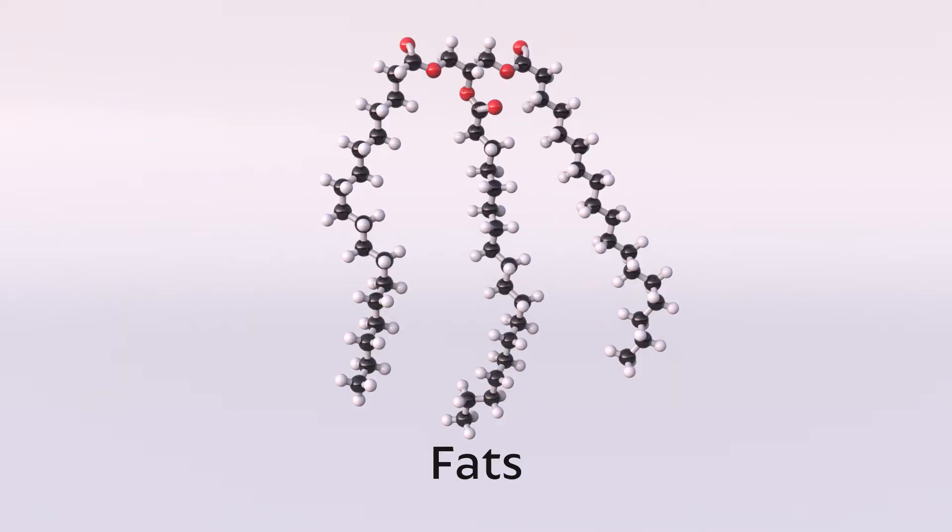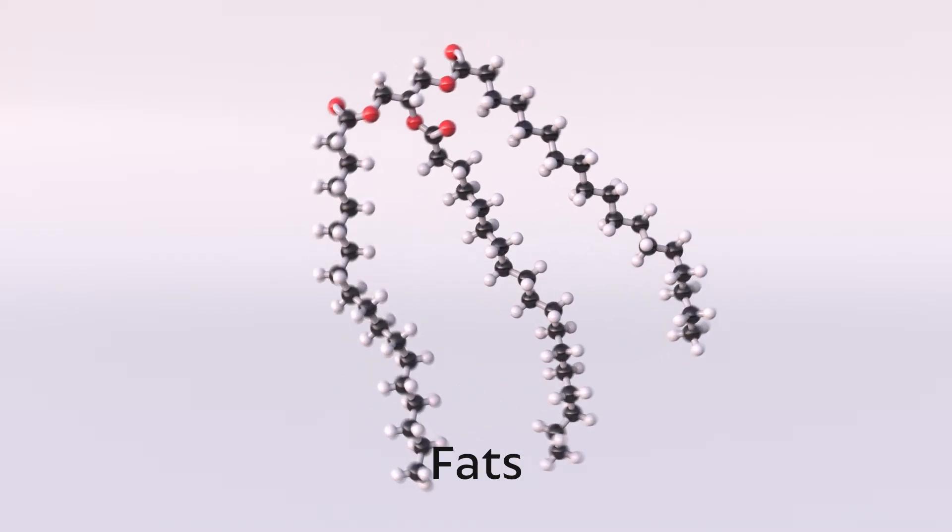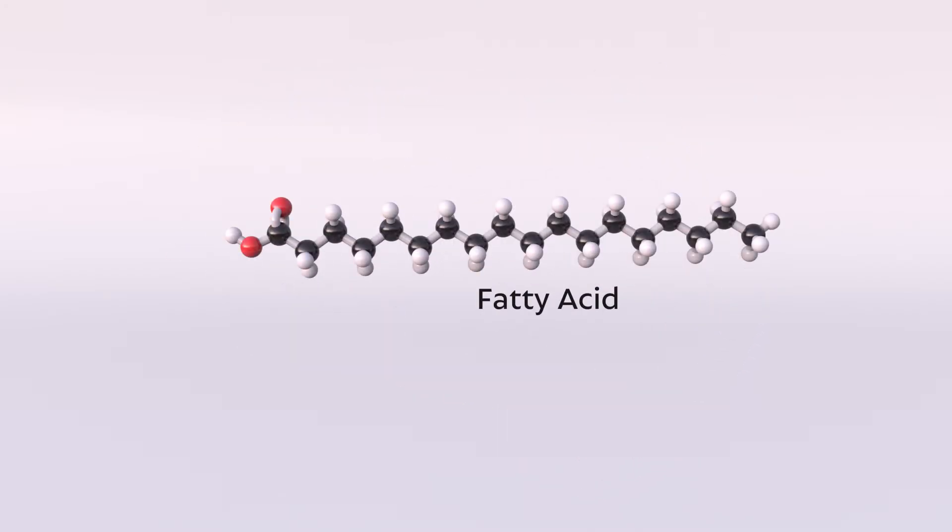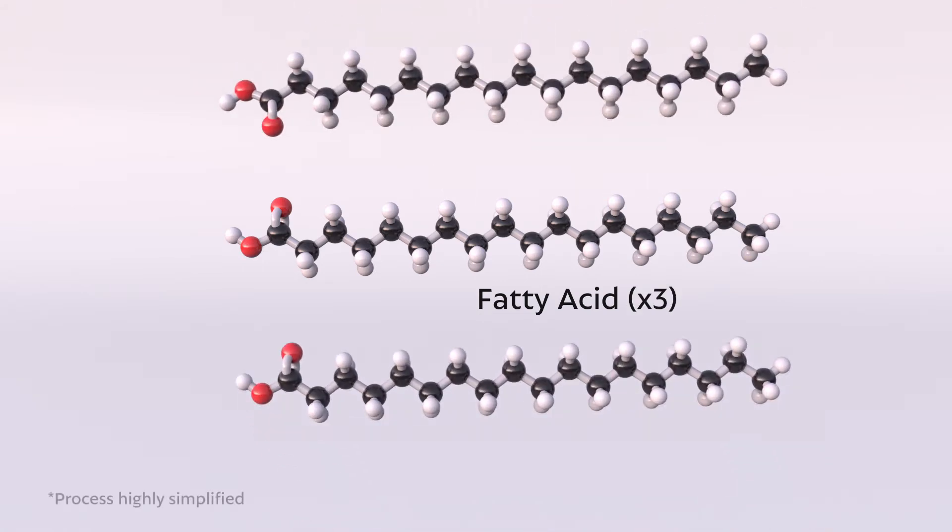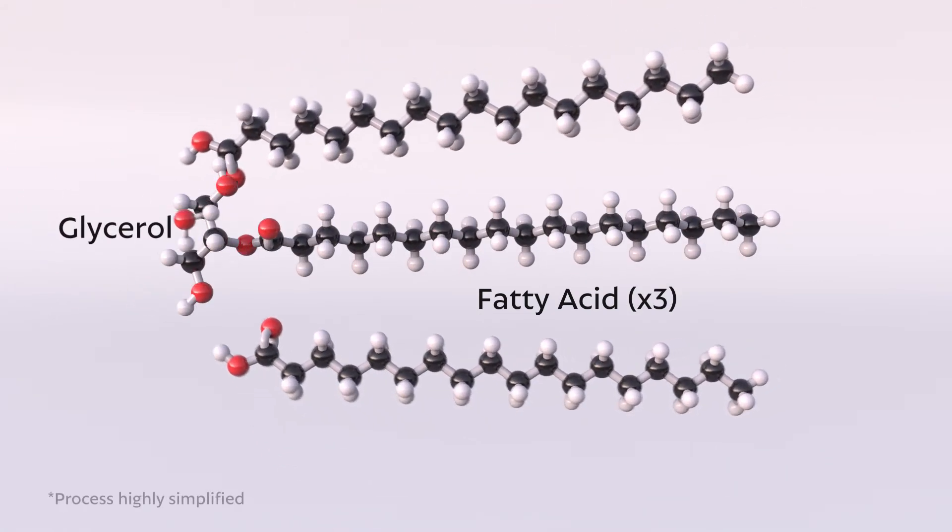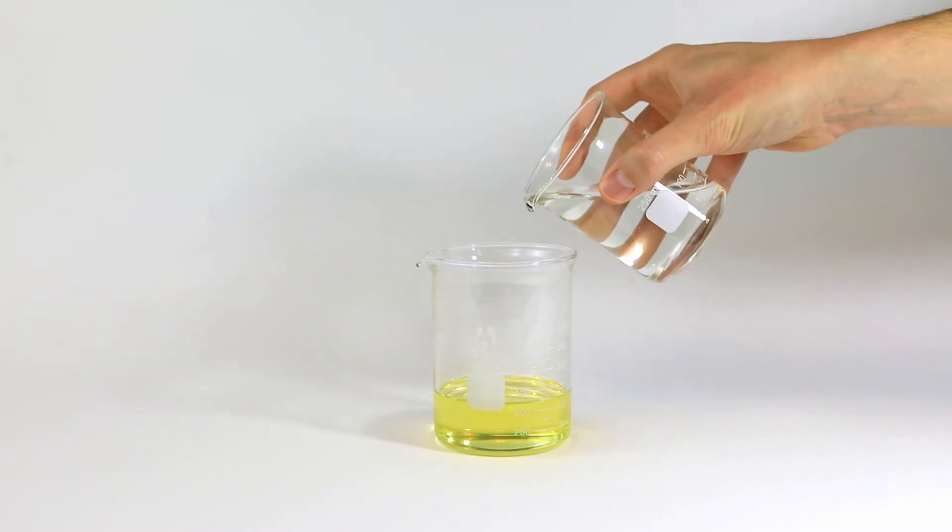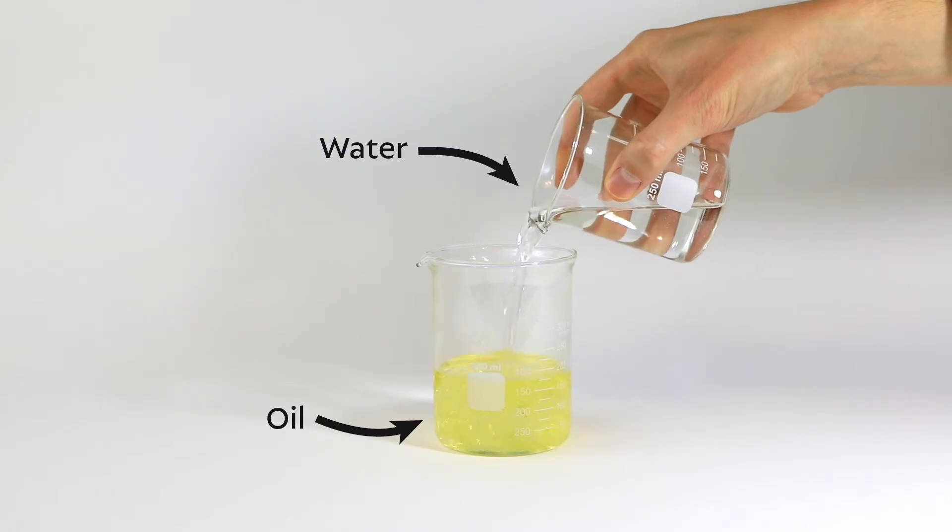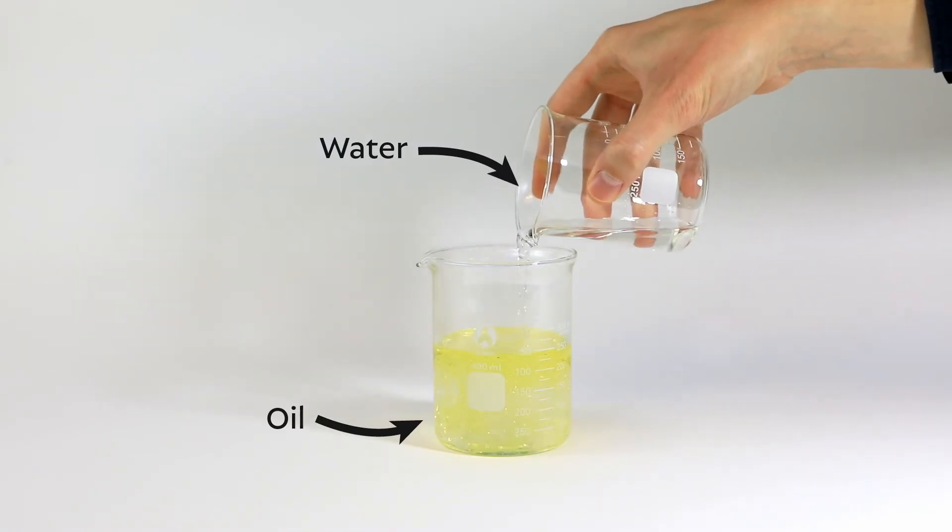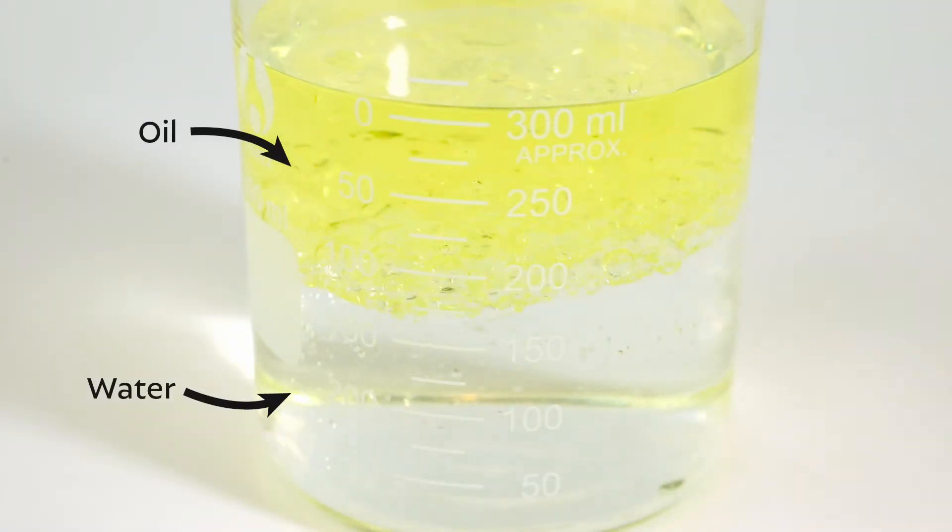First up is fats, which plants and animals use for energy storage in addition to carbohydrates. They are composed of two kinds of small molecules. There's hydrocarbon chains, or long chains of carbon and hydrogen, and three of these chains are connected together by glycerol. Hydrocarbon chains, like those in fats, oils, and wax, don't mix well with water.